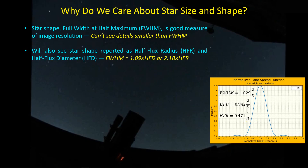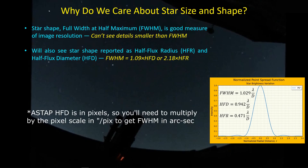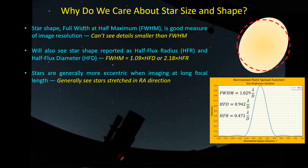We're going to confine our discussion to the full width at half maximum. If you happen to have the half flux diameter, such as is provided by ASTAP, then just multiply that number by 1.09. If you have half flux radius, multiply by 2.18, and then you have approximately what the full width at half maximum would be.